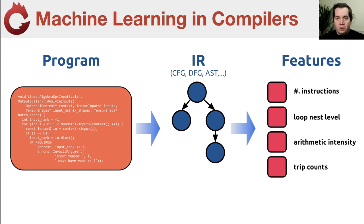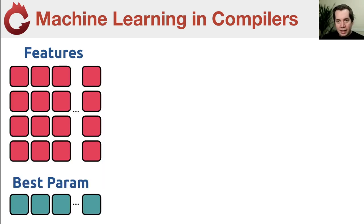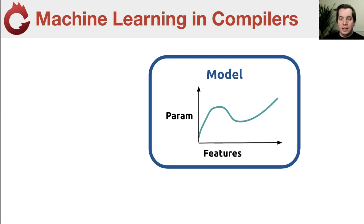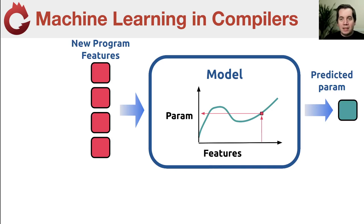The way it works is you've got some program, a piece of code that your compiler is optimizing, and you need ways of representing that as an input to a machine learning model. Typically you lower that program to an IR and count properties of it — the number of instructions, the depth of loop nests, the density of arithmetic operations. If you get enough programs, extract their features, and figure out the best optimization decision for each, you can use supervised machine learning to learn a model correlating those features with the optimization decision that produced the best outcome. That model then becomes your optimization heuristic embedded inside the compiler.